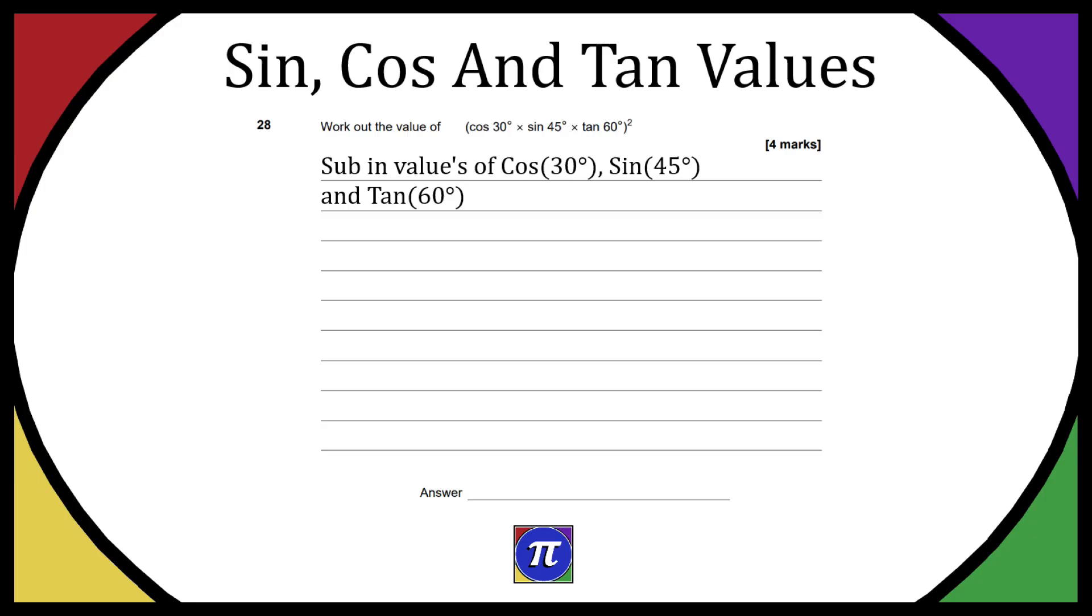Now for the exam, because I believe this is a non-calculator one, you may just have to memorize these values. I believe you're expected to memorize cos of 30, sine of 30, tan of 30, and then the same for 45, 60, maybe 75, and then 90. I know that's a high ask, but I guess that's why it's the final question in the paper.